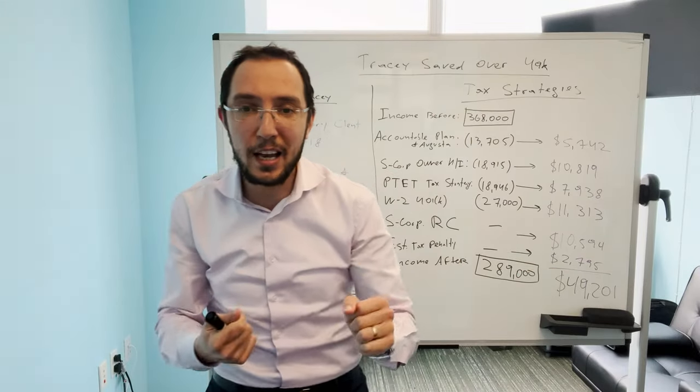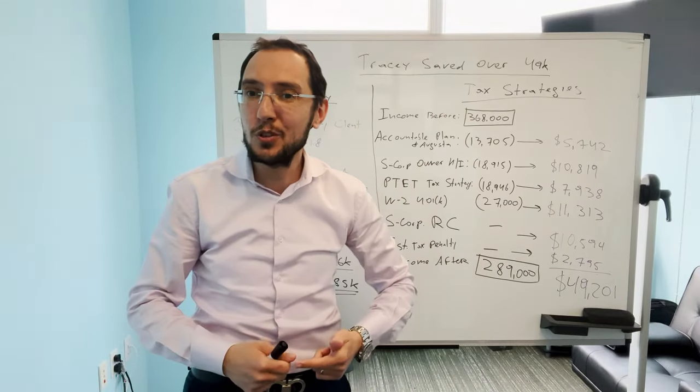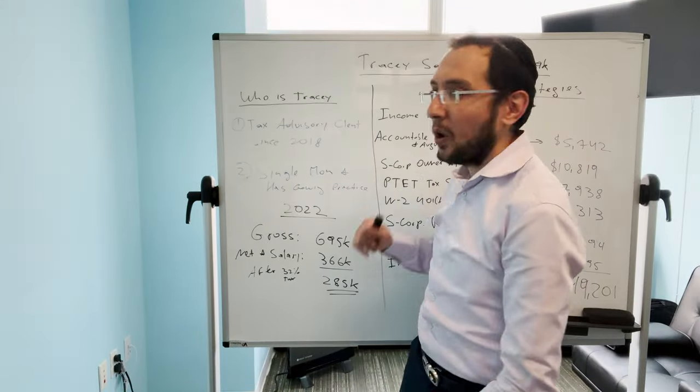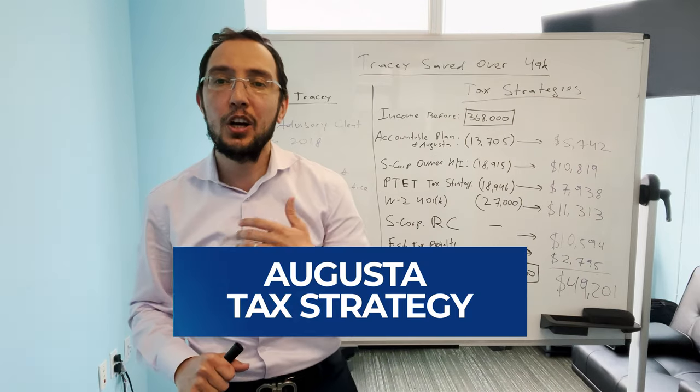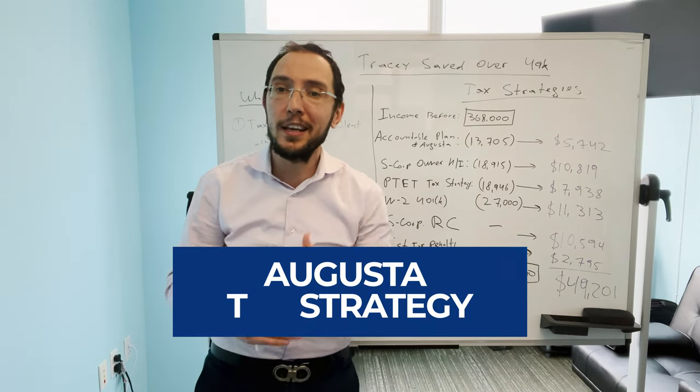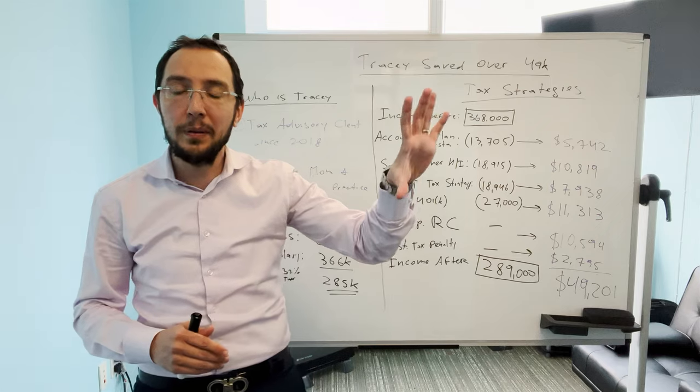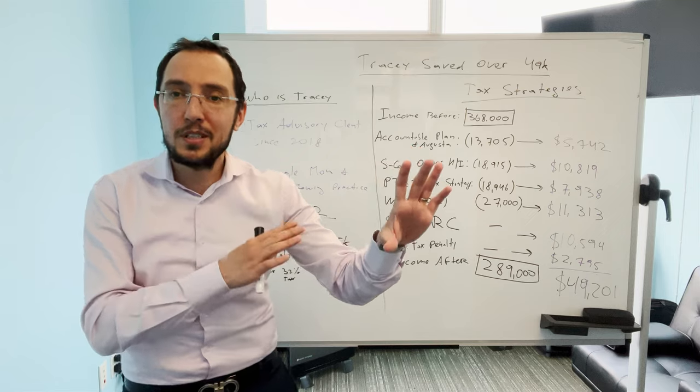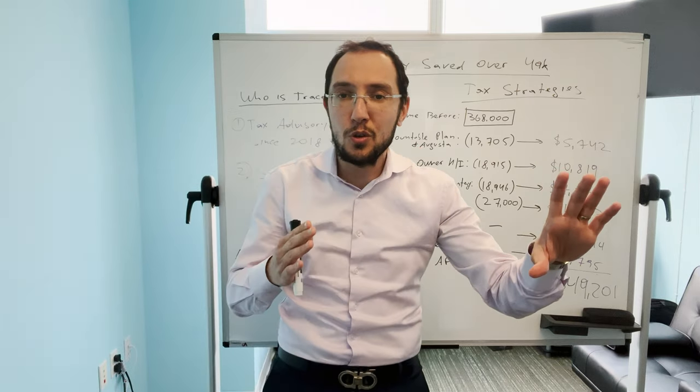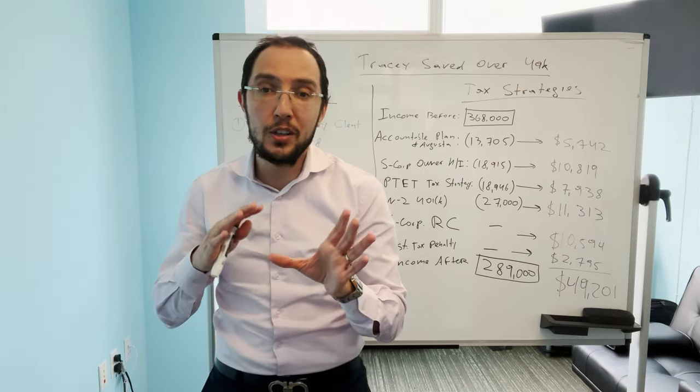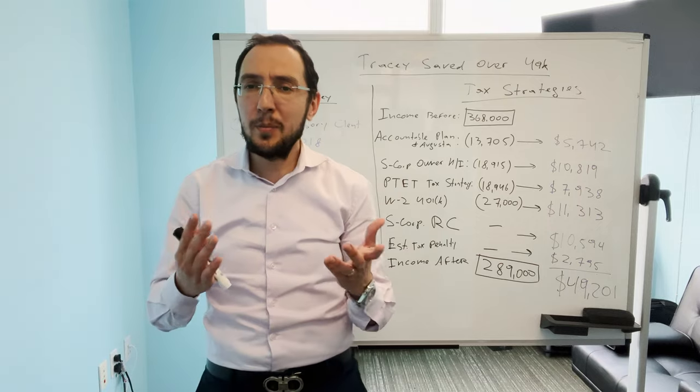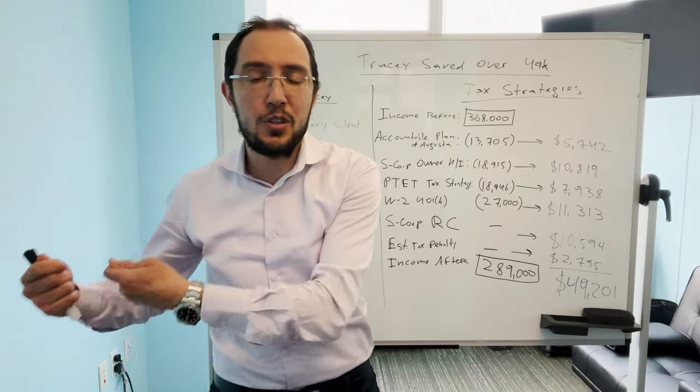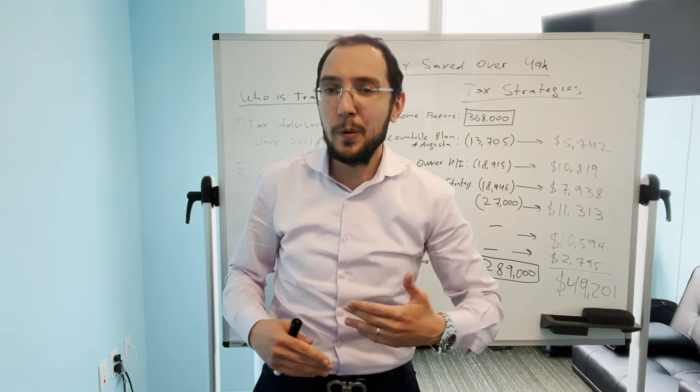The first strategy that we used for her is what I like to call pulling cash tax-free from your business. That's right. The business gives you cash. It's not income. It's not a distribution. It's cash that it gives you and you don't pay any tax on it. That tax strategy is called an accountable plan and an Augusta tax strategy.